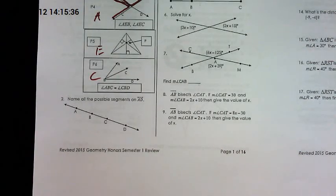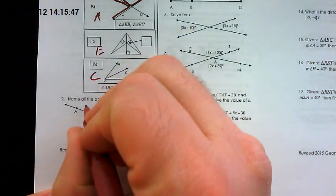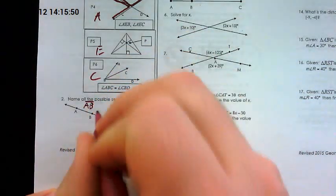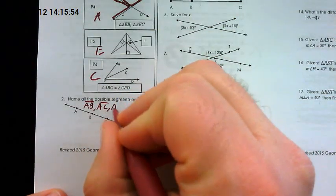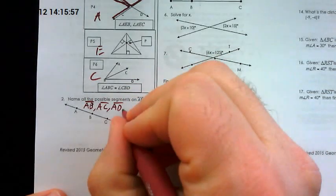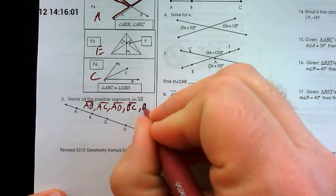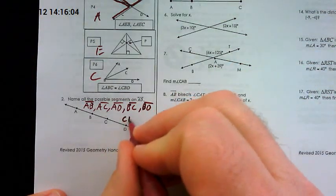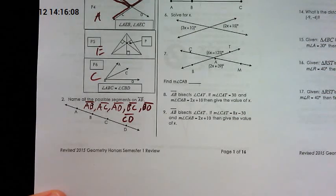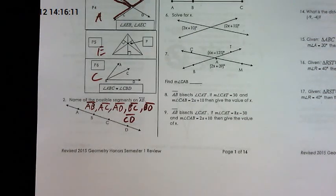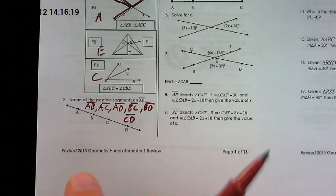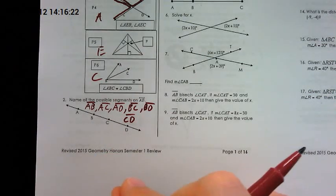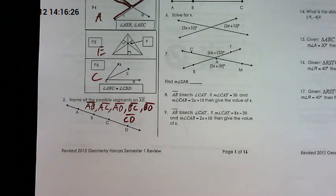Number 2, this is one of those ones I couldn't really put online because there's so many different ways that you could respond. There are six actual answers on this one. I wanted you to list all the possible segments, so we could do AB, we could also do AC, we could have done AD, those all worked. Then you also had BC, BD, and CD.